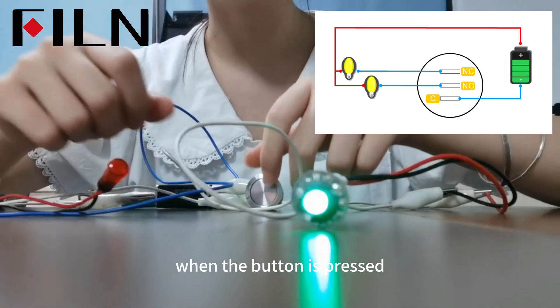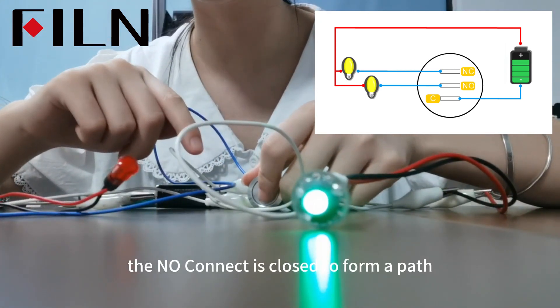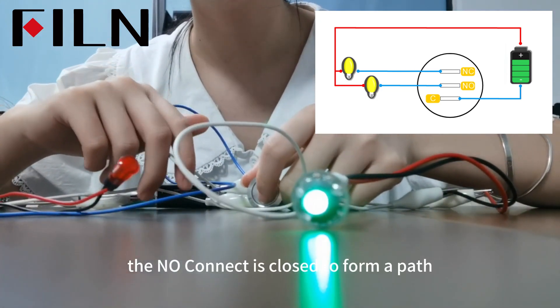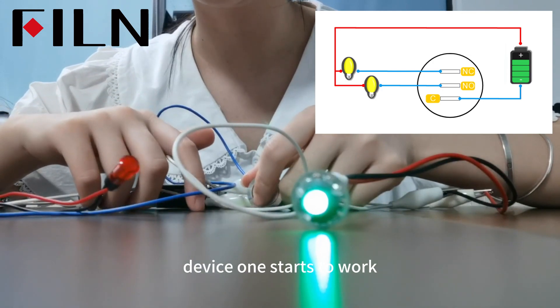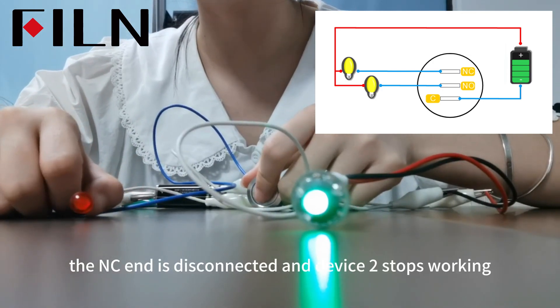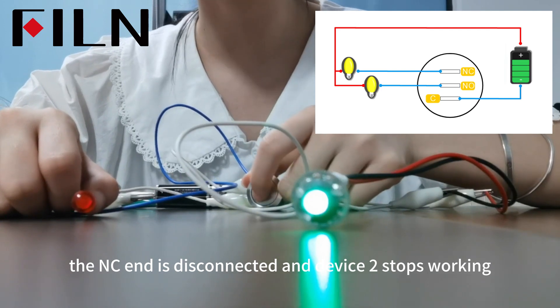When the button is pressed, the NO connection closes to form a path, and device 1 starts to work. The NC end is disconnected and device 2 stops working.